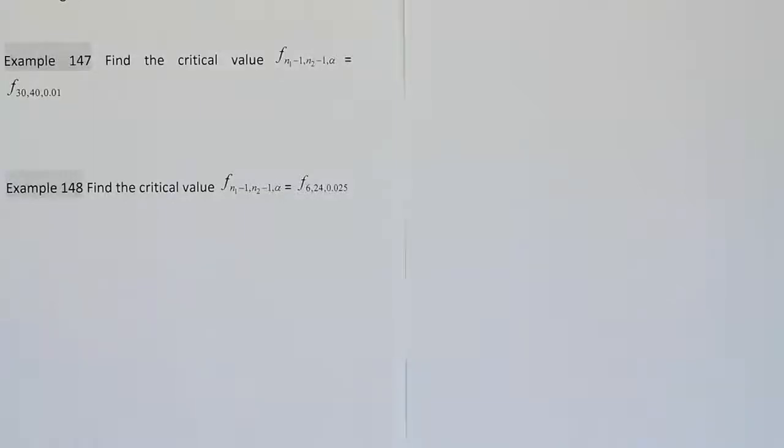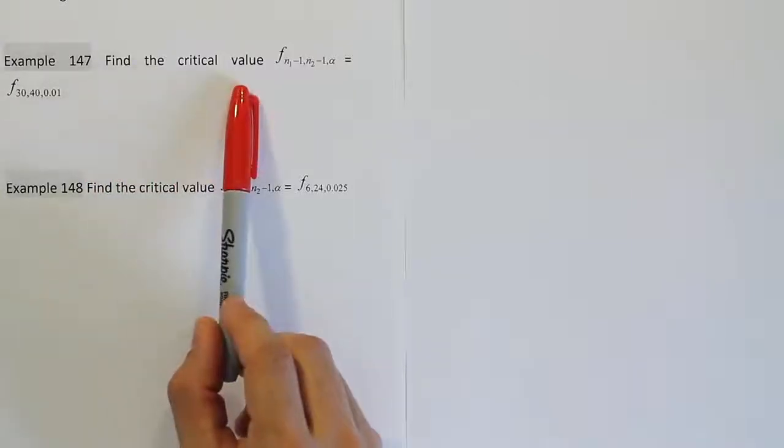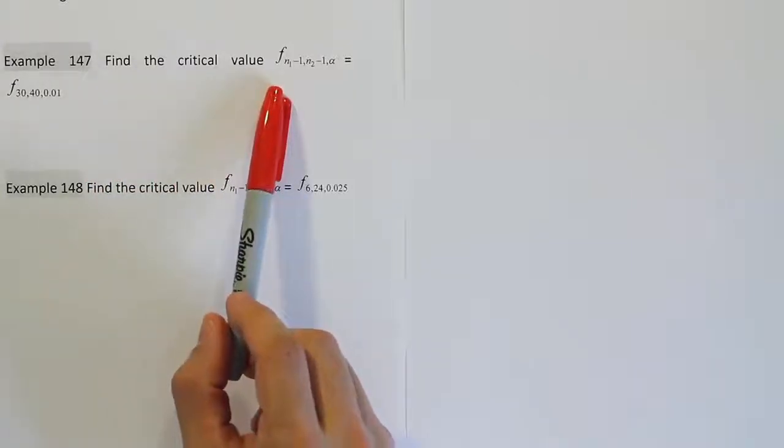Example 147 and example 148. In these problems we're finding critical values using the F-tables that are located inside the back of most textbooks in statistics classes.